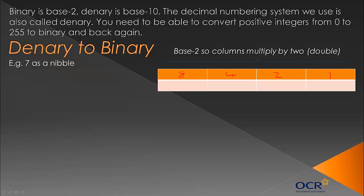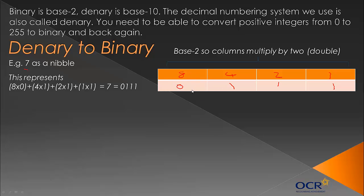You can't use 1 to the power of something because 1 to the power of any number is still 1. So we have our columns set up and we're looking to find the number 7 as a nibble. Does 8 go into 7? No. Does 4 go into 7? Yes, remainder 3. Does 2 go into 3? Yes, remainder 1. Does 1 go into 1? Yes. So that's 8×0 + 4×1 + 2×1 + 1×1, which equals 4+2+1 = 7. That's represented as 0111 in nibble format.